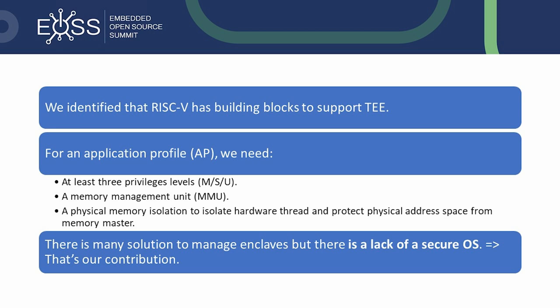This would, for example, prevent a CPU core from accessing the memory of a cryptographic hardware accelerator. To be more specific, the hardware must support at least a user mode and a privileged mode. The privileged mode is used to manage the TEE, and the user mode is intended for running a trusted application.